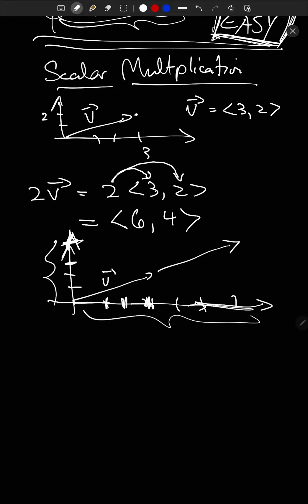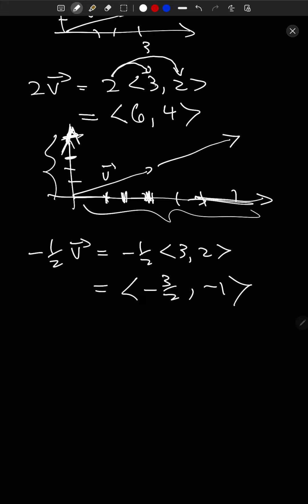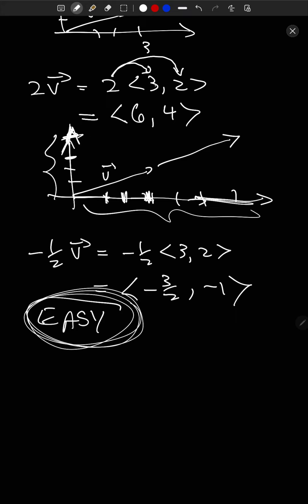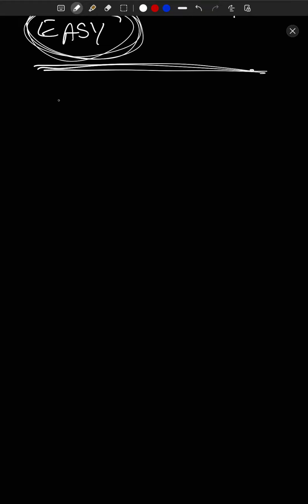Any vector can be written in terms of i-hat and j-hat. For example, angle-bracket 3, 2 angle-bracket equals 3 times angle-bracket 1, 0 angle-bracket plus 2 times angle-bracket 0, 1 angle-bracket, which gives angle-bracket 3, 0 angle-bracket plus angle-bracket 0, 2 angle-bracket equals angle-bracket 3, 2 angle-bracket. So this equals 3 i-hat plus 2 j-hat. The conversion is super easy — the 3 and 2 are the same in both notations. When we get to vectors in space, we'll add a third term with k-hat.